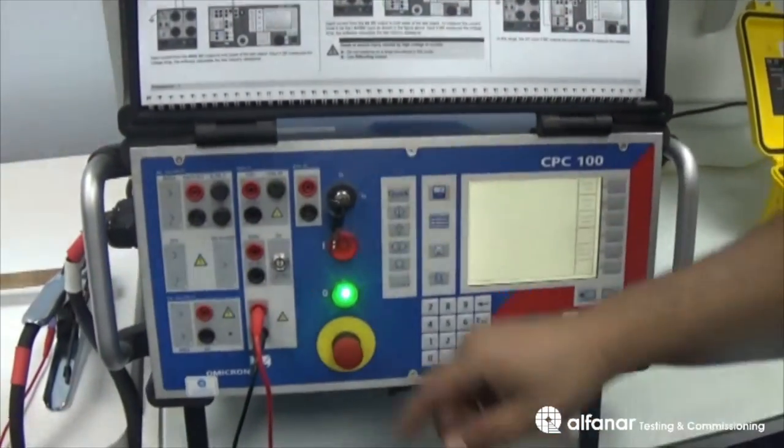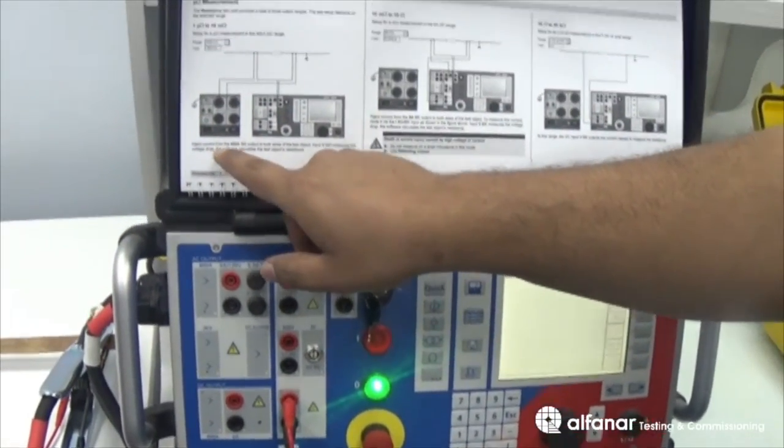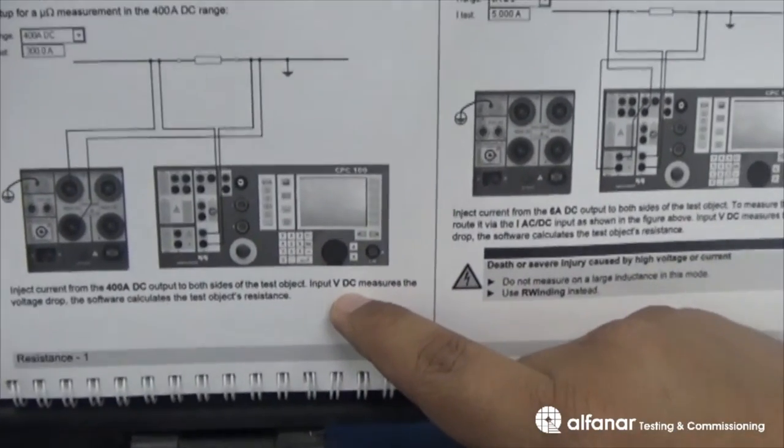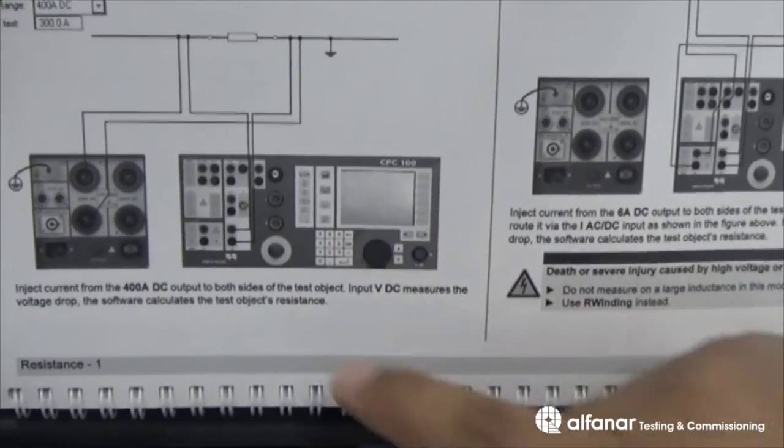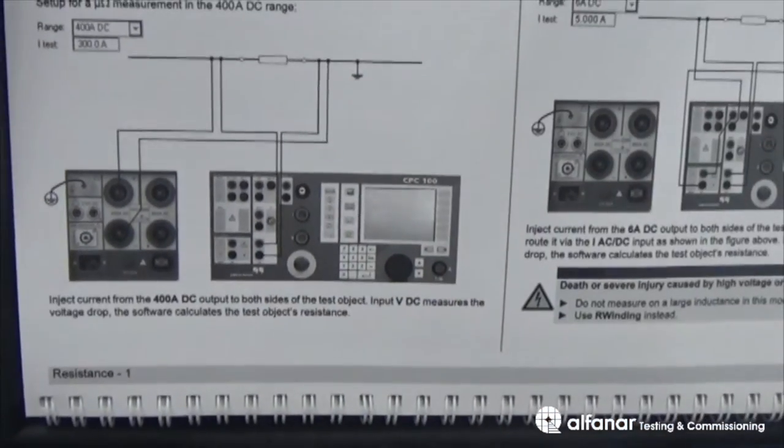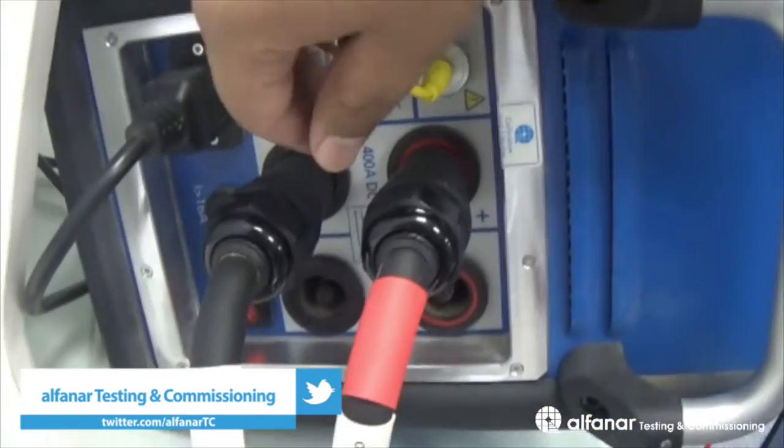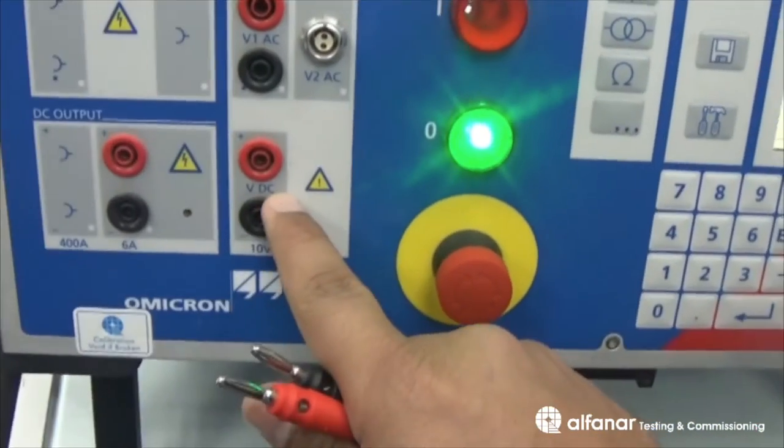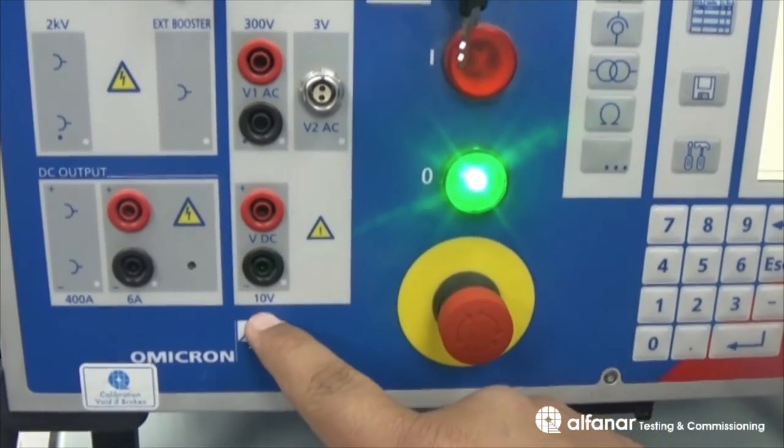As mentioned in the manual, the current will be injected from the 400A DC output, and then the voltage drop will be measured across the VDC terminals in the phase plate of the device. Here is the 400A terminals as shown here, 400A DC. And here is the voltage terminals, VDC with range 10V.